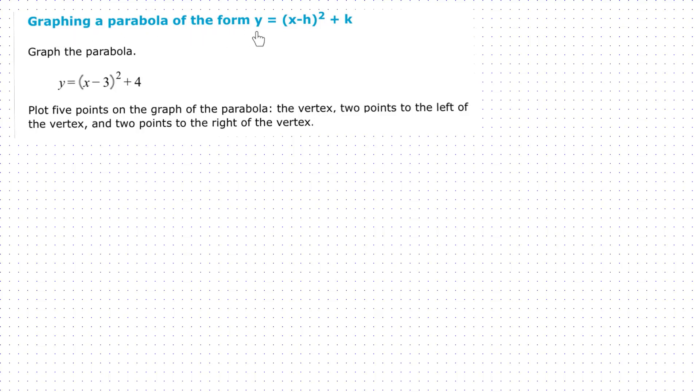Graphing a parabola of the form y equals the quantity x minus h squared plus k. Let's graph the parabola y equals the quantity x minus 3 squared plus 4.